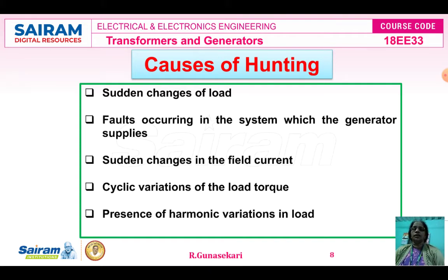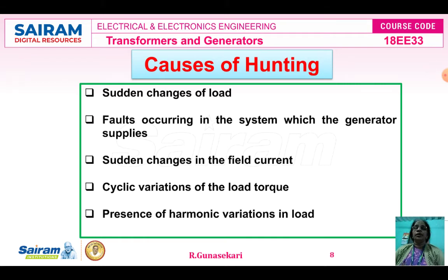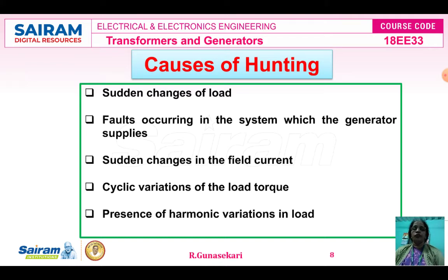The second cause is faults occurring in the power system which the generator supplies. During faulty conditions, fault current is also produced in the power system and supplied by the synchronous generator. The third cause is sudden changes in the field current. If the field current changes, since current is directly proportional to flux and flux is inversely proportional to speed, the speed also varies.